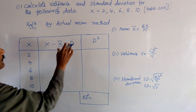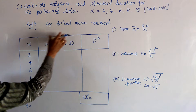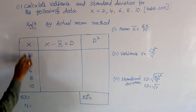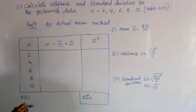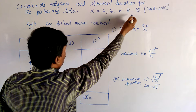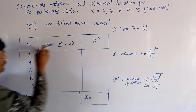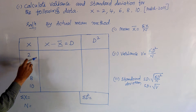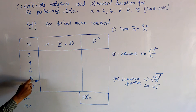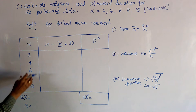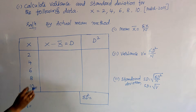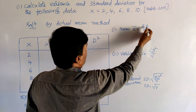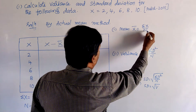For the actual mean method, we write columns. The first column is x, meaning scores. The given scores are written in a vertical column: 2, 4, 6, 8, 10. Then by finding x̄ = σx / n.